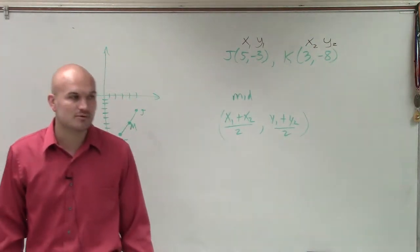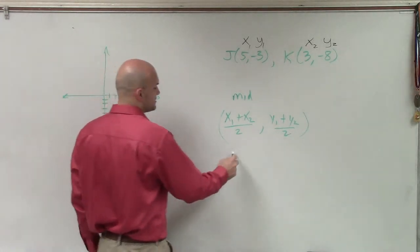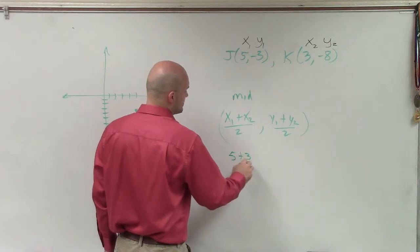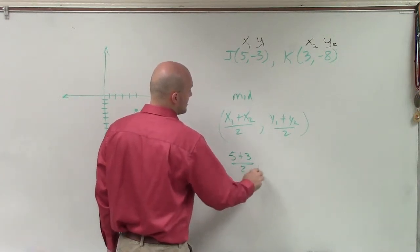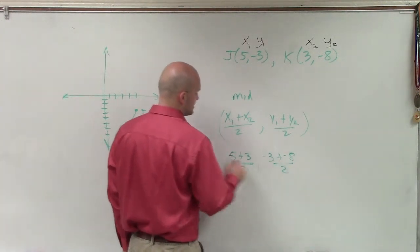But guys, it doesn't matter which one you want to label x1 and y1, x2 and y2. So now, I just go ahead and plug them in. So it would be 5 plus 3 divided by 2, comma, negative 3 plus negative 8 divided by 2.